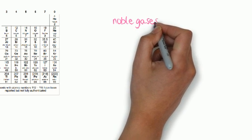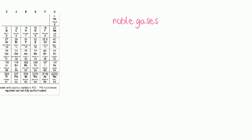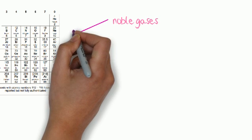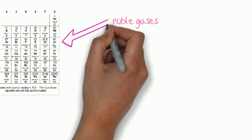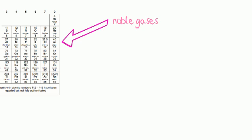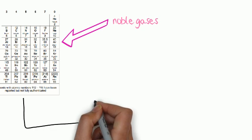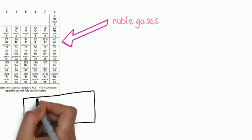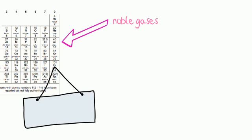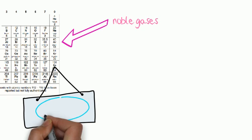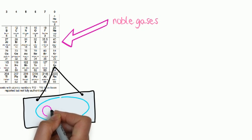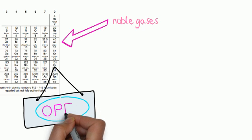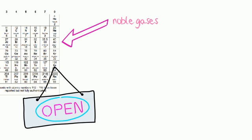So that shell is now full. All of the noble gases have full outer shells. This is what makes them so unreactive — they do not need to react, as they do not need to gain or lose electrons. All elements in the periodic table react because they want to achieve the same electron configuration as the noble gases. They all want full outer shells. They do this by donating, receiving, or sharing electrons.